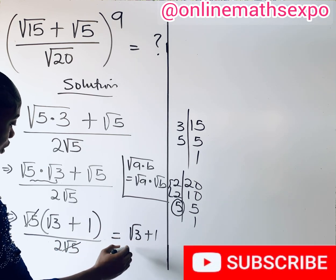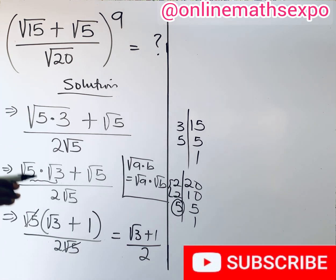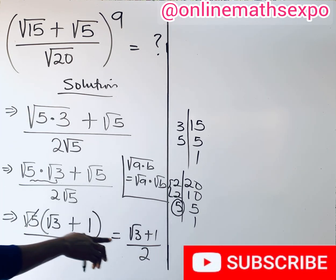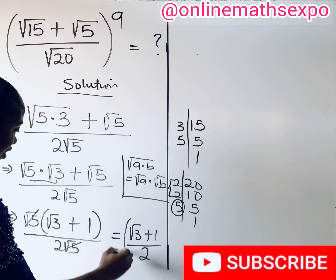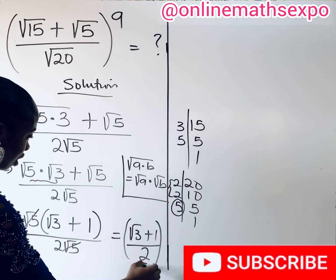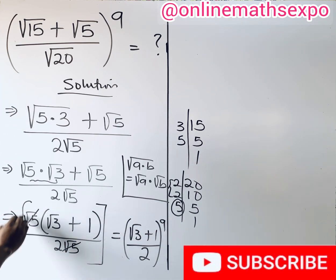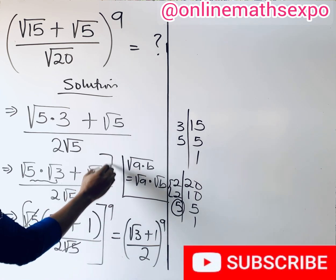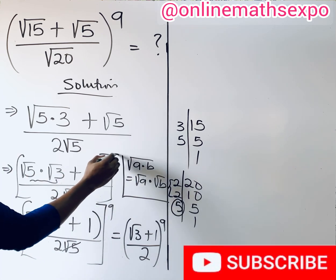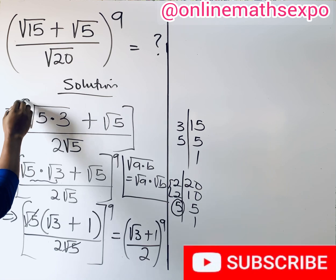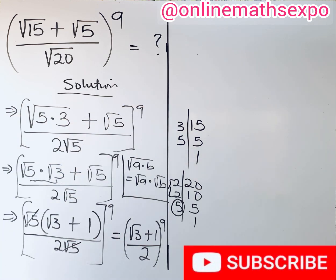Don't forget that all of this is raised to the power of 9. So we return the exponent: the expression (√3 + 1) / 2 is raised to the power of 9. Now let's simplify this.